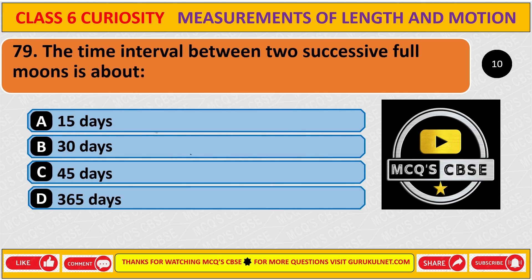The time interval between two successive full moons is above. The correct answer is B, 30 days.